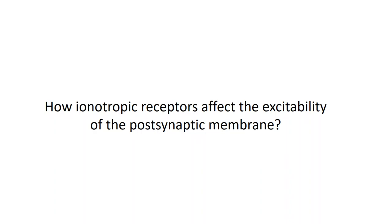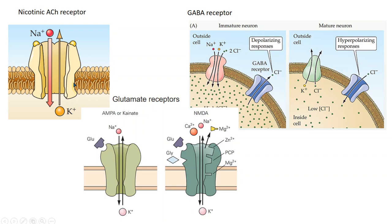Here is how ionotropic receptors affect the excitability of the postsynaptic membrane, with some examples. The nicotinic acetylcholine receptor, the GABA receptor, and the glutamate receptor are all ionotropic receptors. In the case of the nicotinic acetylcholine receptor, when bound to acetylcholine, the ion channel opens and allows the movement of monovalent positive ions or cations.